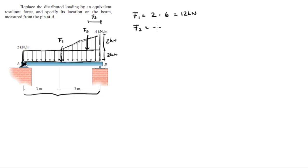F2 has an area of 2 times the length of the triangle which is 3 divided by 2 because the area of the triangle you gotta divide it by 2. That comes out to be 3 kilonewtons.